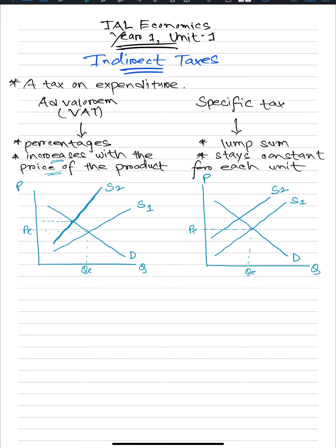For both diagrams, this is my new equilibrium — let's say this is P2. Now the other important thing to know is the incidence of tax, which is basically how much of your tax falls on consumers and how much falls on suppliers. Your incidence of tax will depend on the elasticities of supply and demand. If demand is very price elastic, consumers will pay a lower proportion of the tax. If demand is very price inelastic, consumers will pay a higher proportion of the tax.